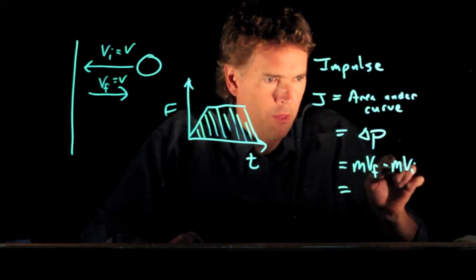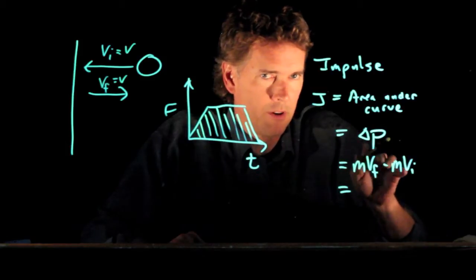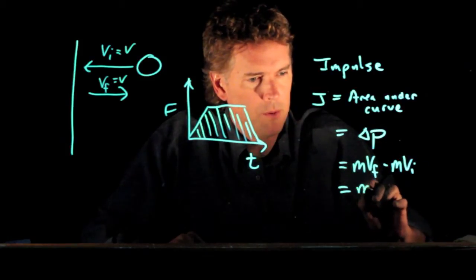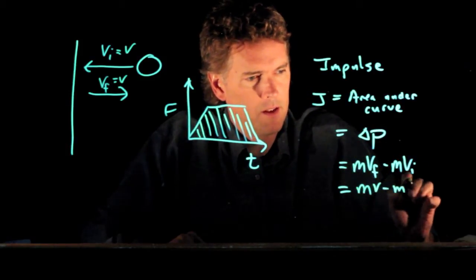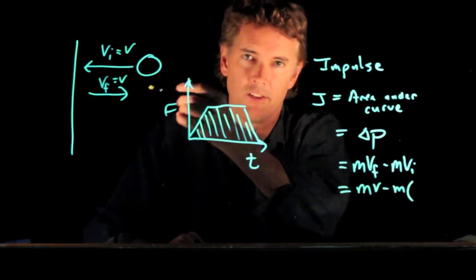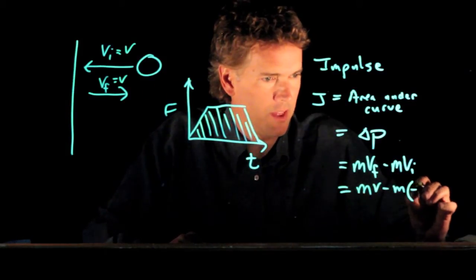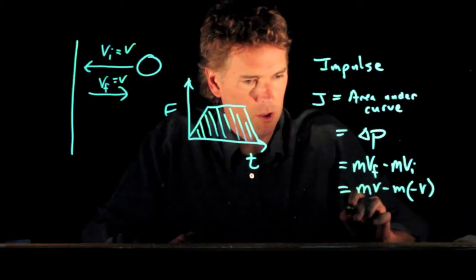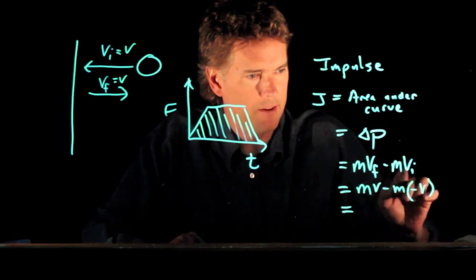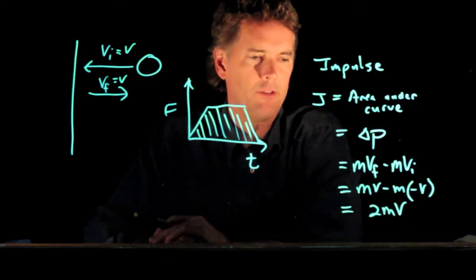All right, if I made both of those Vs, this whole thing would go to zero. We know that can't be right. But what we do know is that V initial is to the left, and we're going to say that's a negative. And so look what happens. We end up with a negative negative. We end up with 2MV.